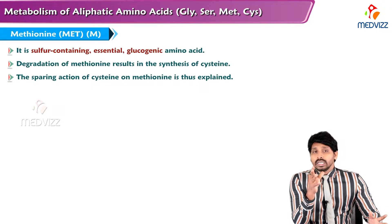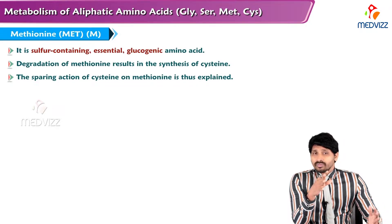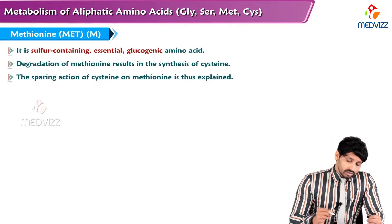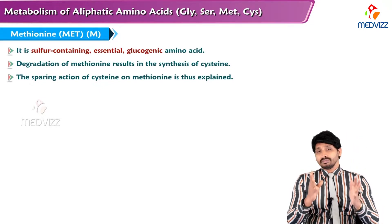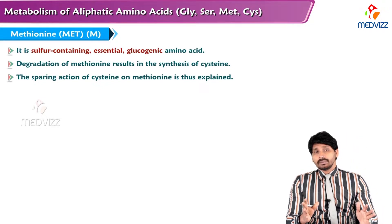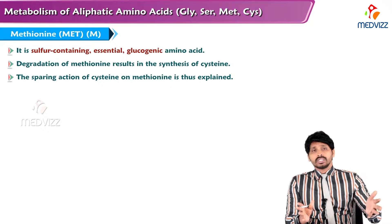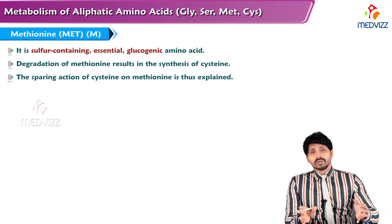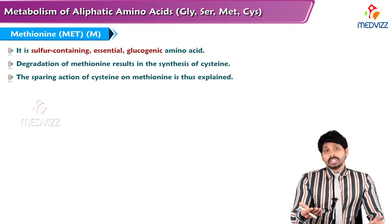In Methionine, the sulfur is not a free sulfur but is locked inside with the help of a methyl group. Being essential means it cannot be synthesized in the body, so we are not worried about the synthesis — only the catabolism part will be covered here.